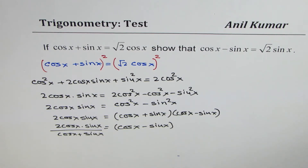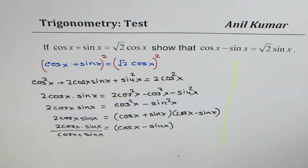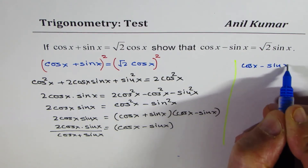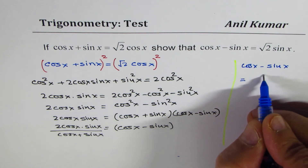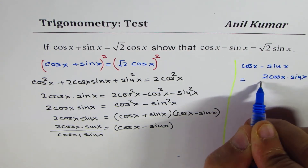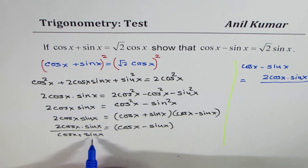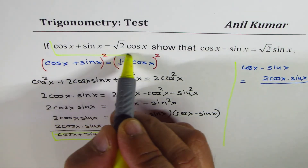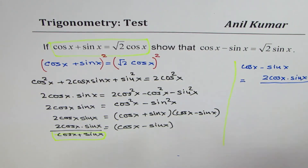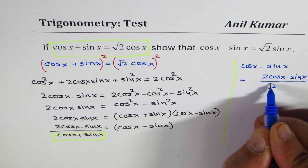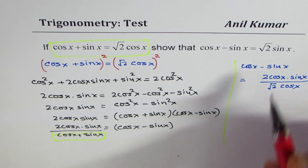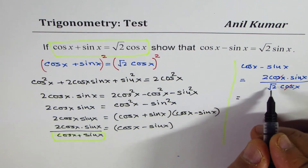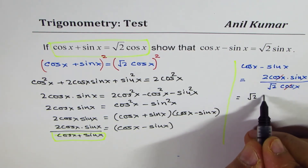Cos x minus sin x equals 2 cos x sin x divided by (cos x plus sin x). Now cos x plus sin x is given to us as square root 2 cos x. So we write square root 2 cos x in the denominator. Then cos x and cos x cancel, and we get cos x minus sin x equals 2 divided by square root 2, times sin x, which is square root 2 sin x.